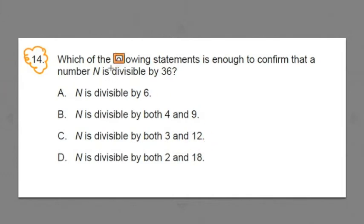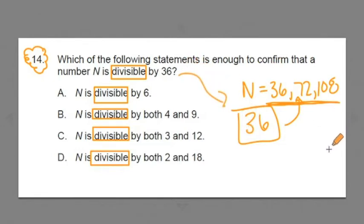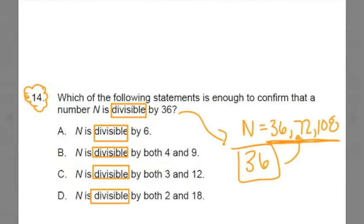Now you'll notice in this problem, the word divisible appears throughout. This is going to be a key concept. When we say something like N is divisible by 36, what this is saying is that N can be divided by 36 evenly without there being a remainder. There are only a few numbers out there that can be divided evenly by 36 without a remainder. We call them multiples of 36. Like for example, N could be 36 or 72 or 108. In order for 36 to go into these numbers, N has to be a multiple of 36.